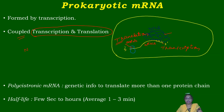There are two reasons why coupled transcription and translation occurs in prokaryotes. First, there is no nucleus present in prokaryotes. Second, post-transcriptional modifications do not occur in prokaryotic mRNA. Because of these two reasons, coupled transcription and translation is facilitated in prokaryotes but not in eukaryotes.